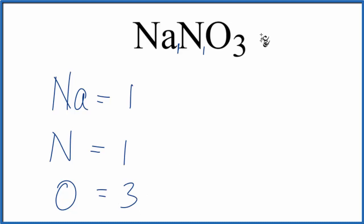So if we want to know the total number of atoms in NaNO3, we just add these up. 3 plus 1 plus 1, 5 atoms in NaNO3.